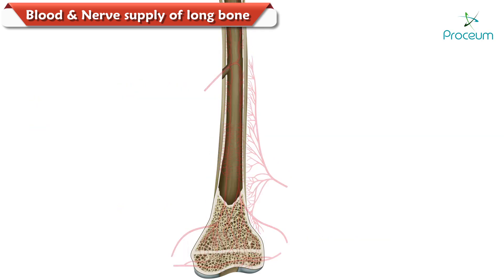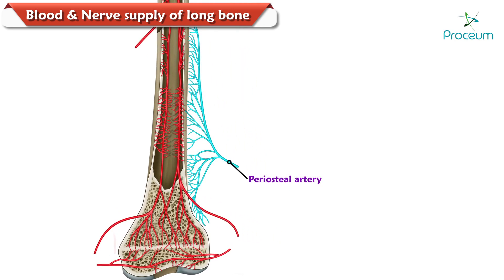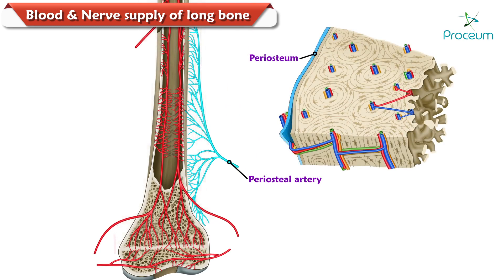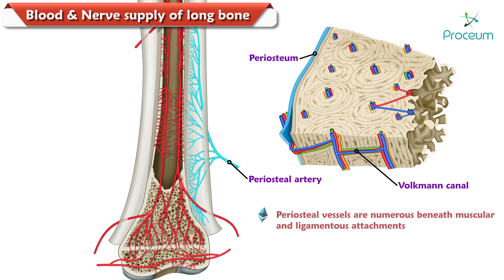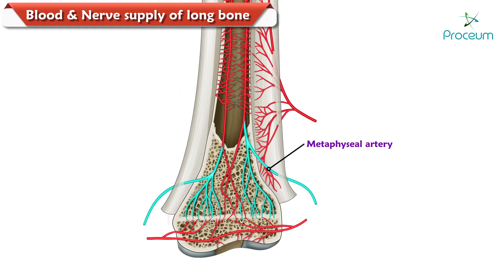Coming to the periosteal arteries: they are numerous and ramified beneath the periosteum. They enter the bone through Volkman's canals to supply the outer one-third of the cortex. The periosteal vessels are especially numerous beneath the muscular and ligamentous attachments.